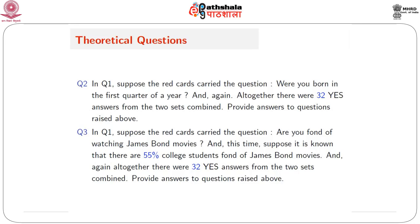In the unrelated questions method, the black cards ask "Are you a smoker?" while the red cards ask "Were you born in the first quarter of a year?" — a question entirely unrelated to smoking. Both questions yield a yes or no answer. Suppose again altogether there are 32 yes answers from the two sets combined. Can you estimate capital P, the proportion of smokers, and provide a variance estimate?